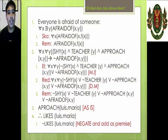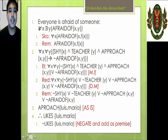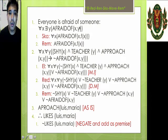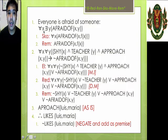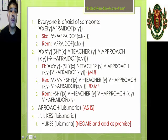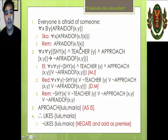Let's look at the next statement: everyone is afraid of someone — for all X and for some Y, X is afraid of Y. Let's Skolemize. As we can see, for some Y is preceded by for all X, so we replace all instances of Y with f of X. It will now be: for all X, X is afraid of f(X). Then remove the universal quantifier: afraid(X, f(X)).